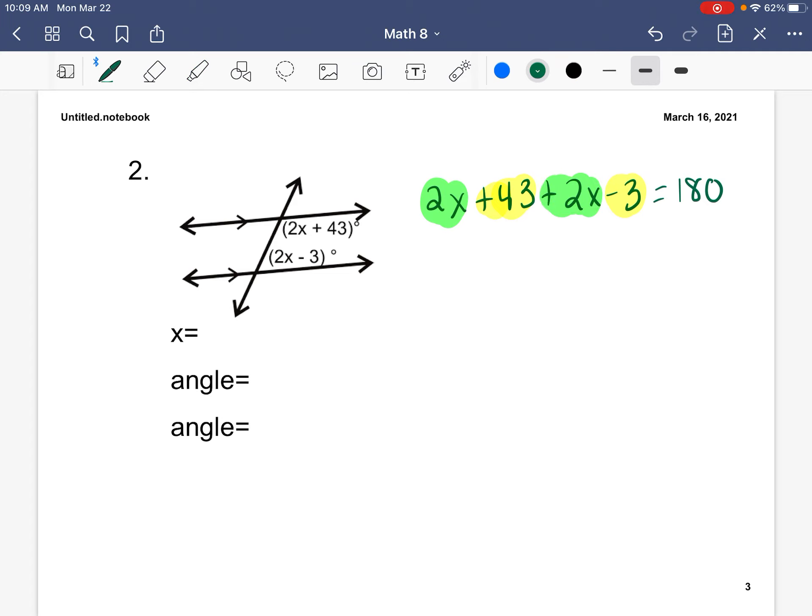So 2x plus 2x gets us 4x. 43 minus 3 gets us positive 40. Then we are going to subtract 40 from both sides, bring down our 4x and our equal sign, and we get 140. Then divide by 4. So x equals 35.